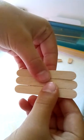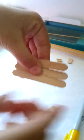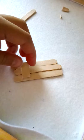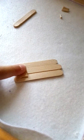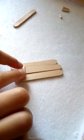Start by taking three popsicle sticks and arranging them like this. Take these popsicle sticks that have been cut out. Then you'll need to glue both of them like this.